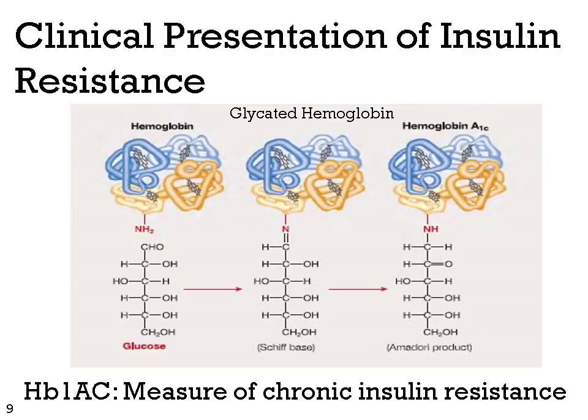Increased circulating glucose levels, like those found during insulin resistance, lead to glycation — the addition of glucose to free amines on proteins. One way that we diagnose insulin resistance is through the measurement of glycated hemoglobin, more commonly known as HbA1c. As circulating glucose increases, the non-enzymatic addition of glucose to hemoglobin accumulates over time, making this a good indicator of chronic insulin resistance.